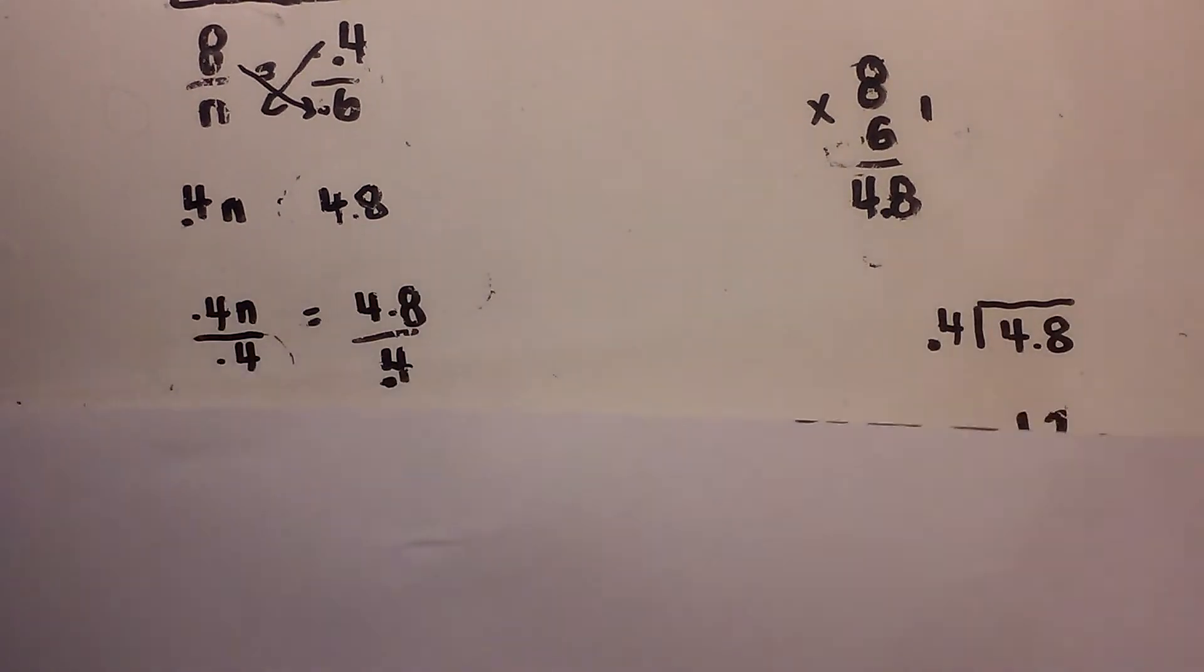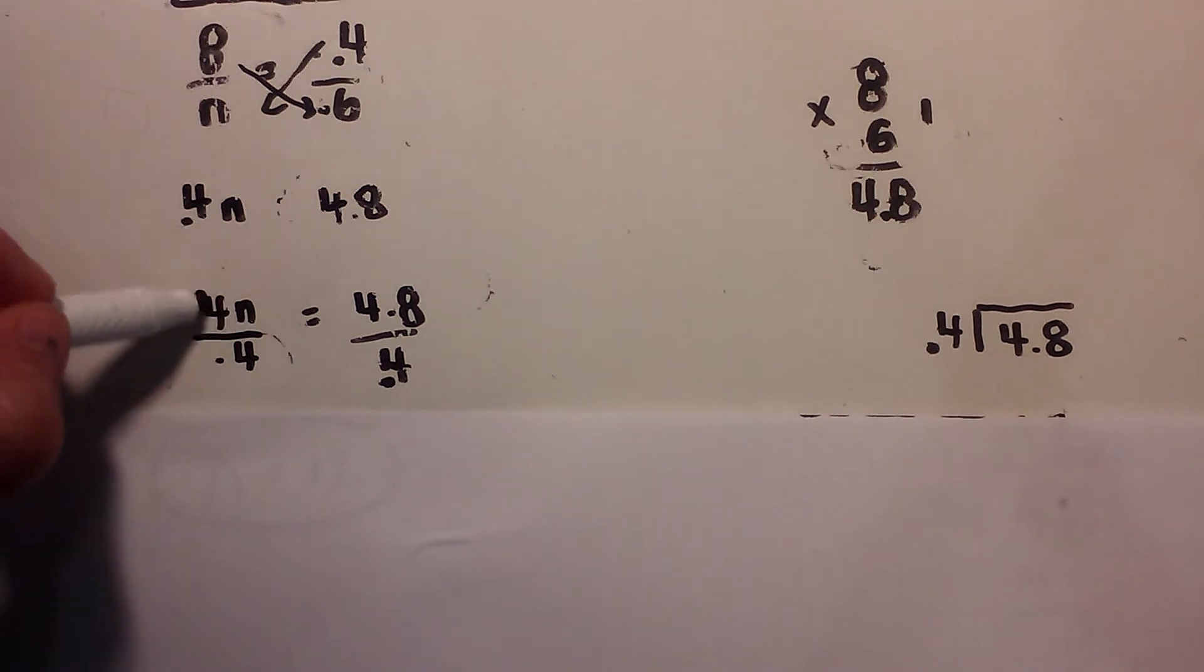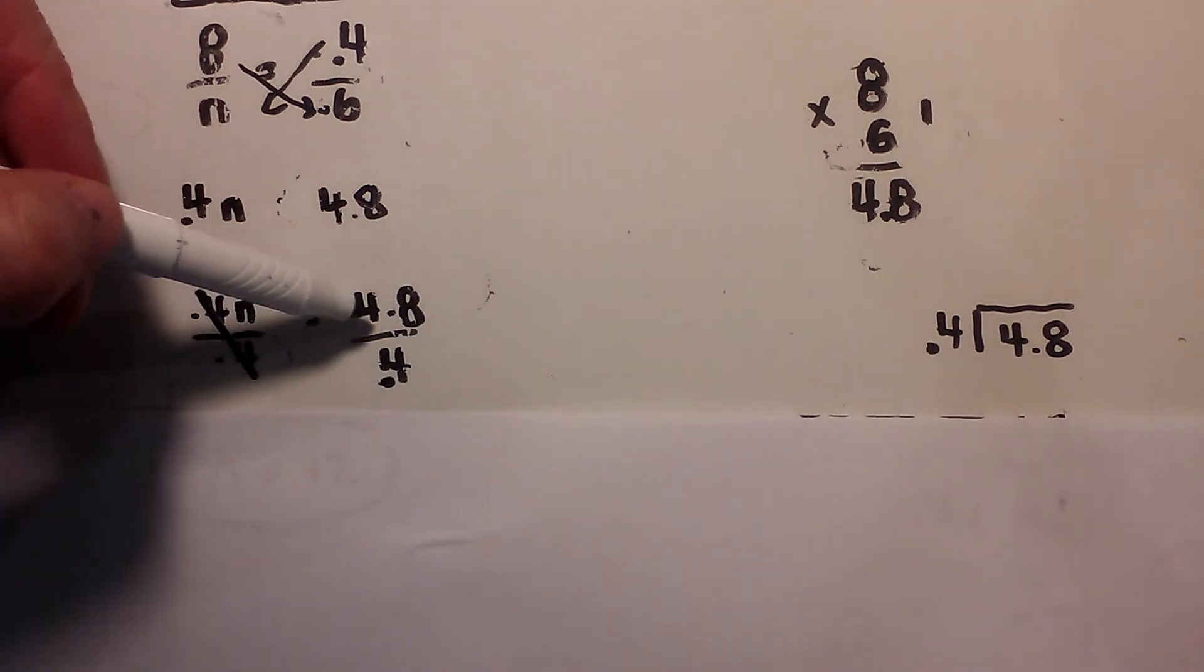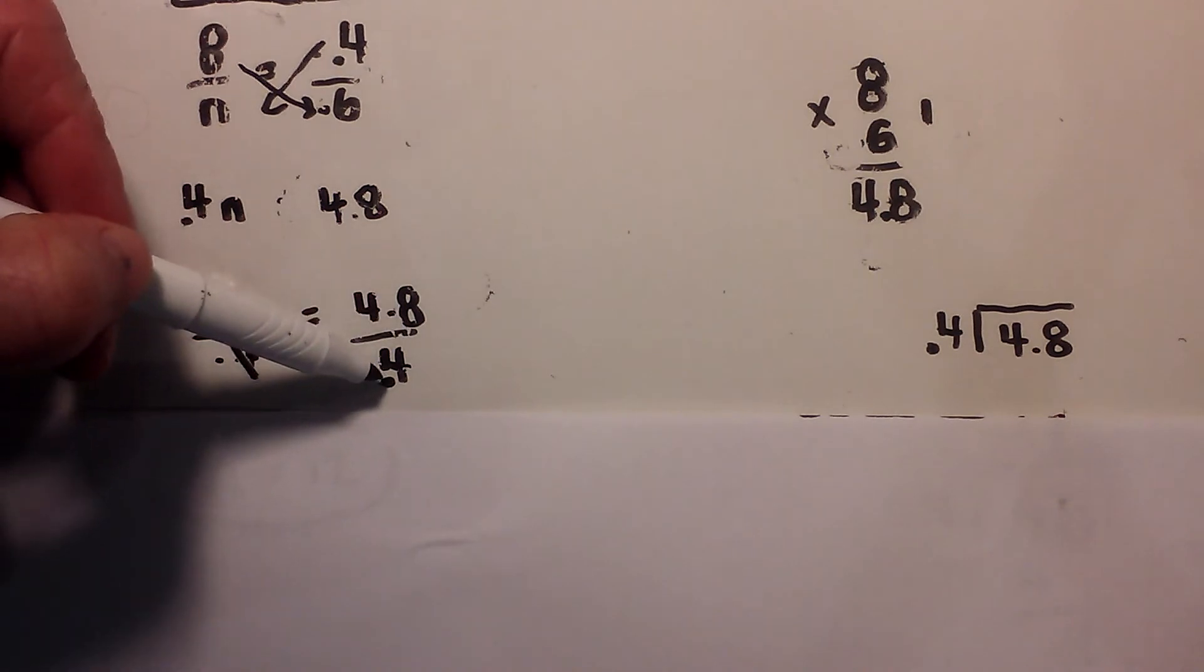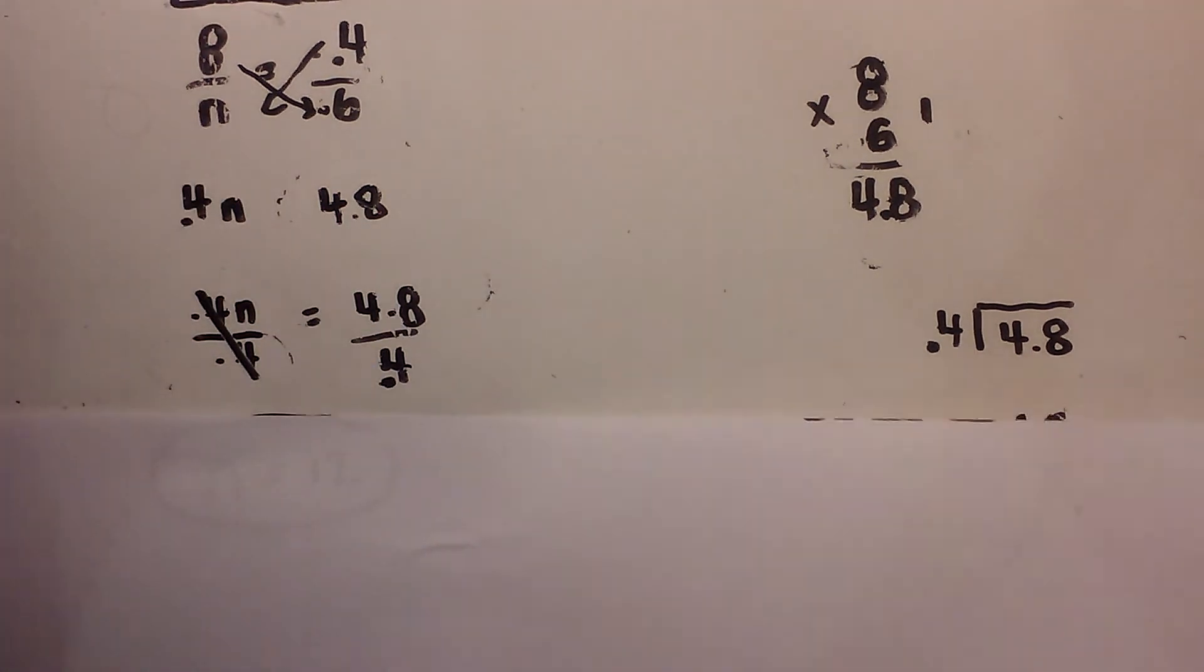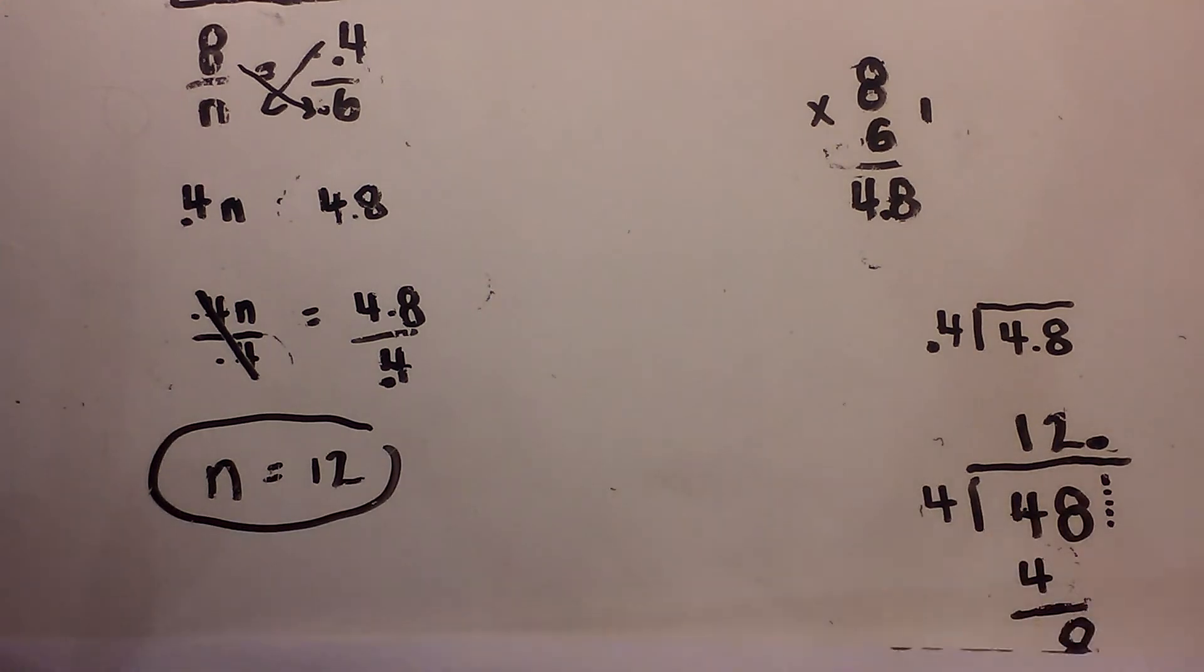And so now we're going to divide 0.4n by 0.4 and they're both going to cancel out, and we have 4.8 divided by 0.4. So let's refresh our memory on dividing with a decimal point.